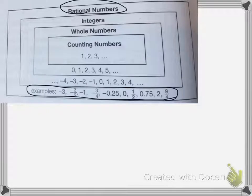The second group, inside of rational numbers, is integers. Integers are whole numbers that are positive and negative, so no fractions or decimals.